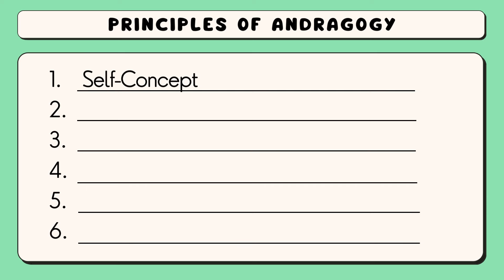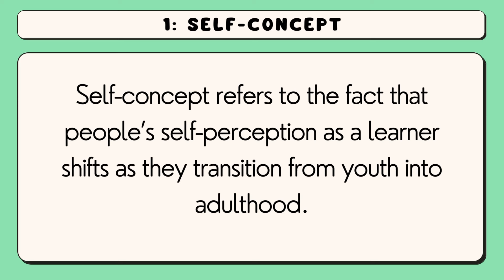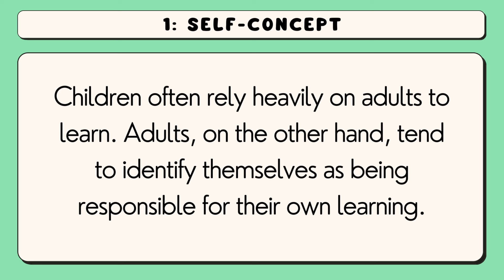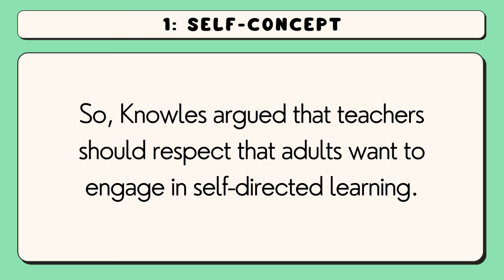The first principle is self-concept. Self-concept refers to the fact that people's self-perception as a learner shifts as they transition from youth into adulthood. Children often rely heavily on adults to learn. Adults, on the other hand, tend to identify themselves as being responsible for their own learning. Knowles argued that teachers should respect that adults want to engage in self-directed learning.